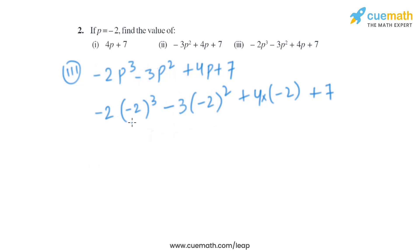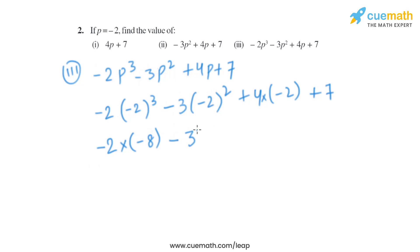The cube of minus 2 is minus 2 into minus 2 into minus 2, which gives us minus 8. So it becomes minus 2 multiplied by minus 8. The square of minus 2 is minus 2 into minus 2, which is plus 4. That gives minus 3 into 4, then 4 into minus 2, plus 7.